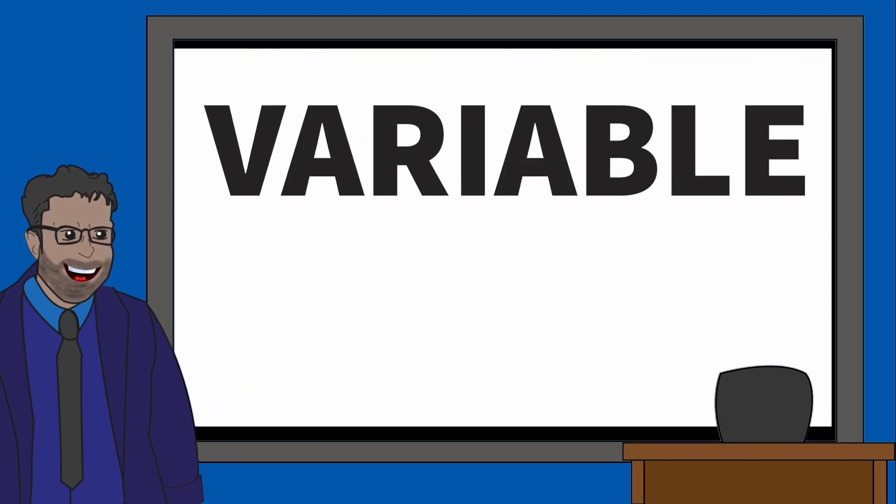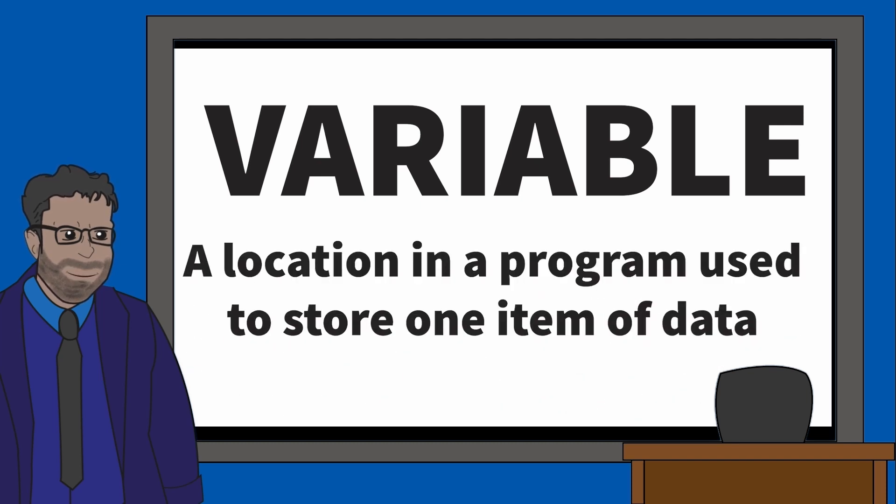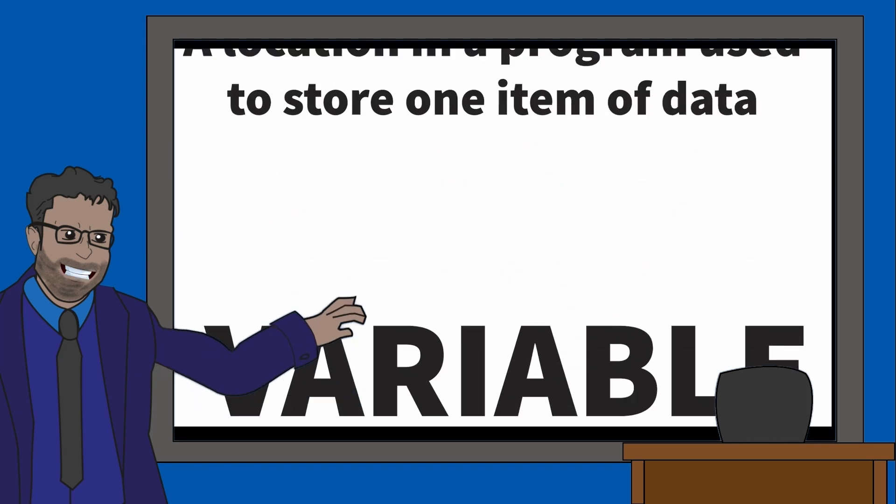When the user enters data, we need to store that data in something called a variable. This is a location or box in your program used to help the computer remember data for later. So always have a variable when using inputs and here's what it looks like.